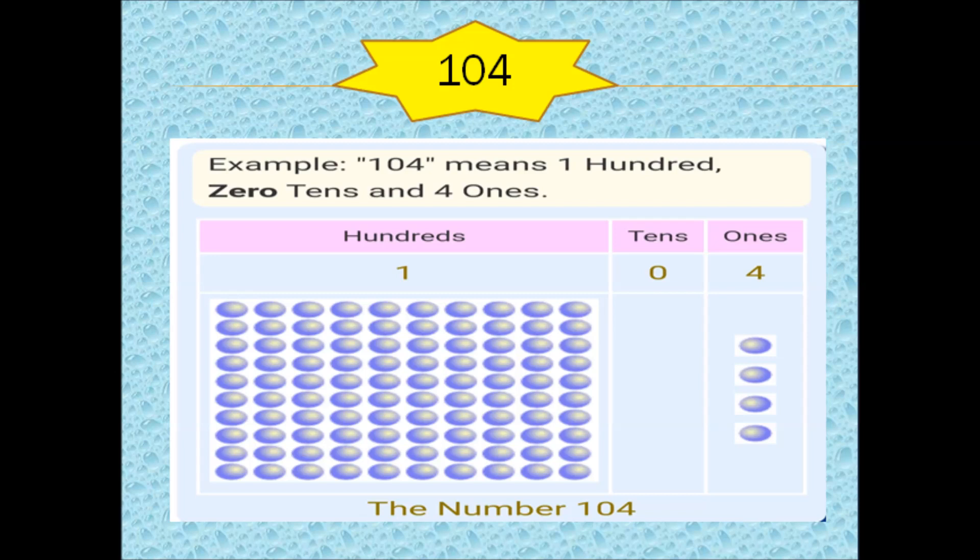Now let us take a 3 digit number, 104. In this number, we will have 4 in the 1s place. As you can see, there is nothing in 10s place, so we will write 0.